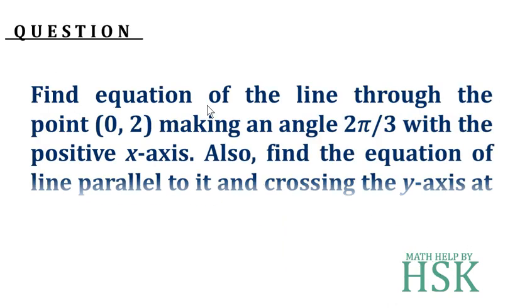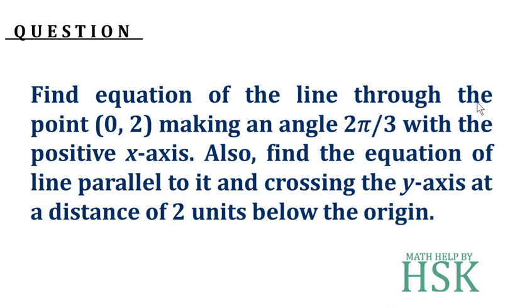The question is: find the equation of a line through point (0, 2) making an angle of 2π/3 with the positive x-axis. Also find the equation of a line parallel to it and crossing the y-axis at a distance of 2 units below the origin.